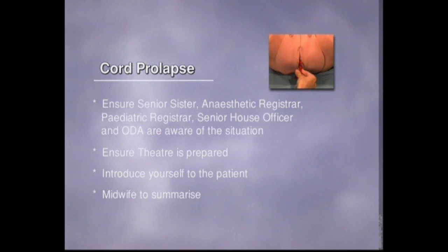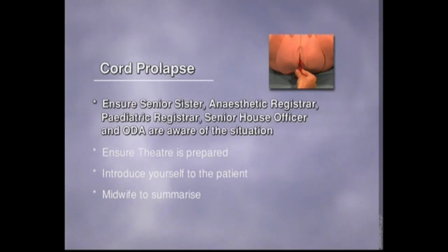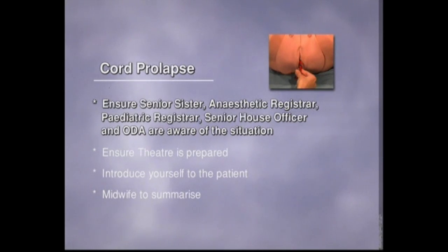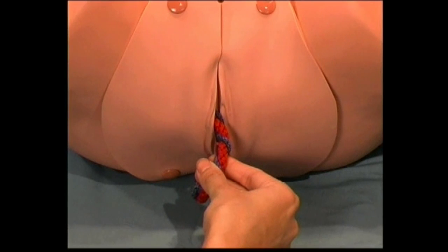A cord prolapse is demonstrated in this case. On entering the room, ensure that the senior sister has been informed and the anaesthetic registrar, paediatric registrar, senior house officer and ODA have been called to labour ward. The next step is to check the cord for pulsation gently, while at the same time ensuring the midwife is attempting to auscultate the fetal heart.